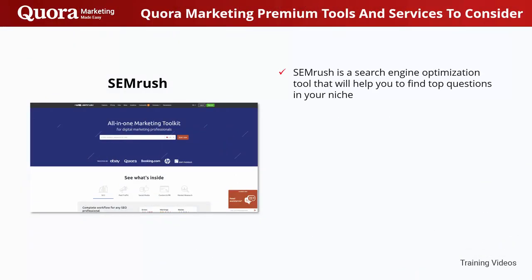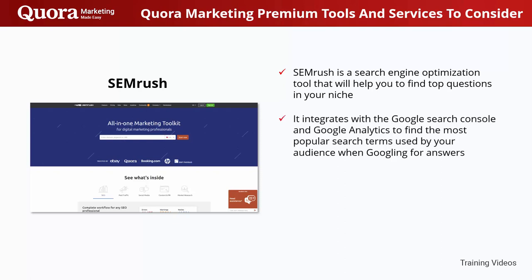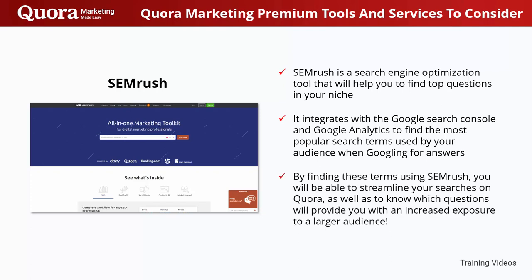SEM Rush is a search engine optimization tool that will help you find top questions in your niche. It integrates with the Google Search Console and Google Analytics to find the most popular search terms used by your audience when Googling for answers. By finding these terms using SEM Rush, you will be able to streamline your searches on Quora and know which questions will provide you with increased exposure to a larger audience.